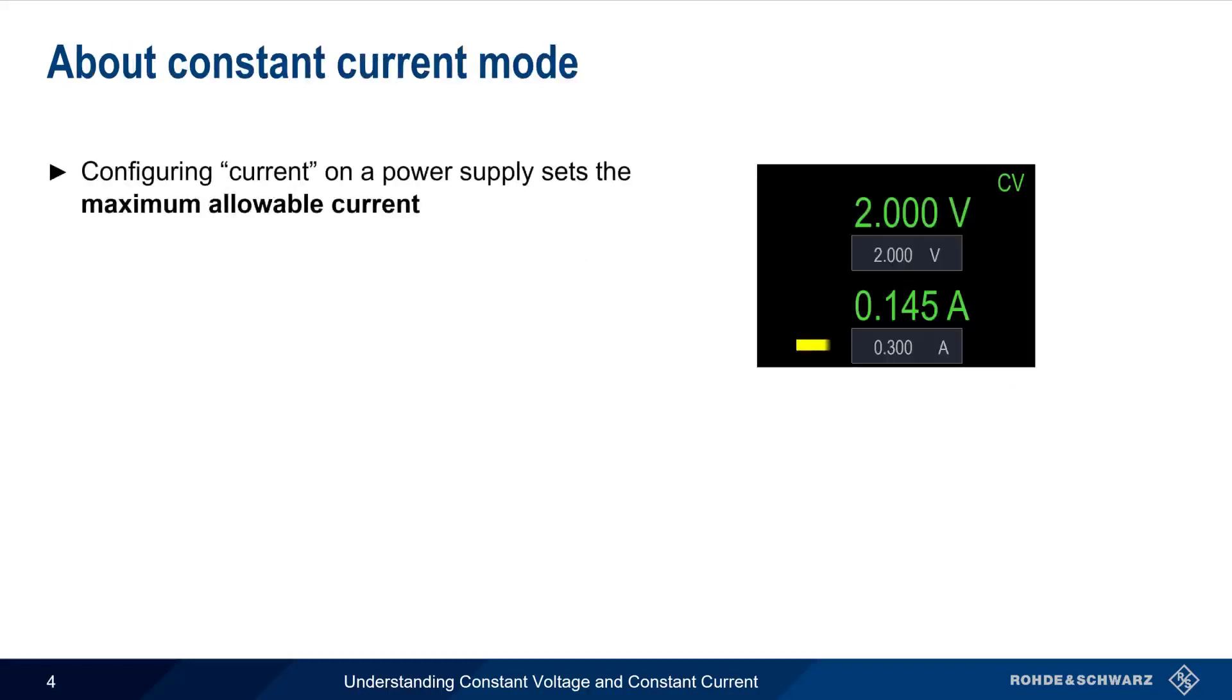The current value configured on a power supply sets the maximum allowable current, or the current limit. It doesn't directly control or set the output current below this threshold.